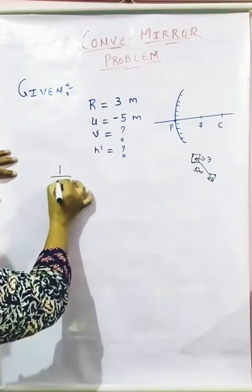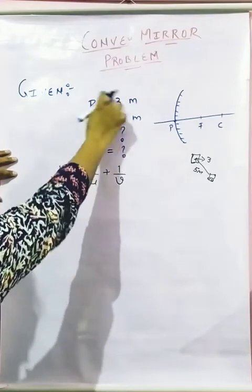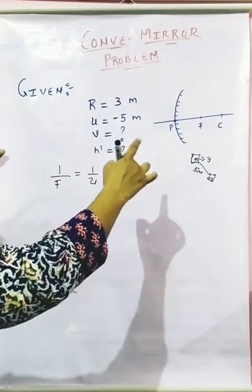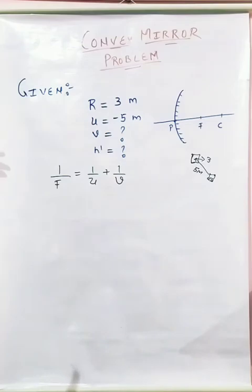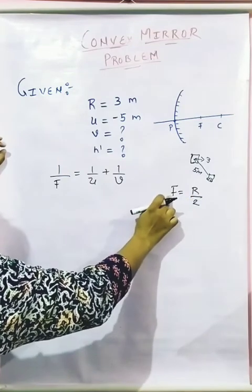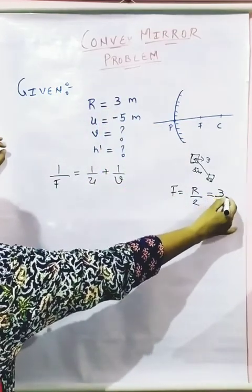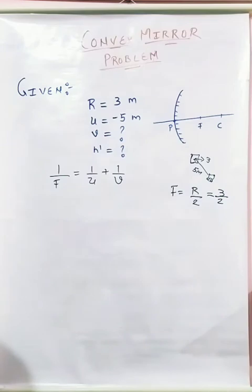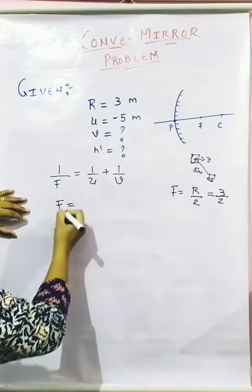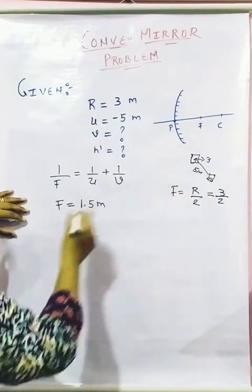So using mirror formula: 1/F = 1/U + 1/V. But if you will see here we have only R, not F. So how can I calculate my F? You remember the relationship between the focal length and the radius of curvature. It says F = R/2. So what is my F? By substituting this value, this is 3/2. So F I have got that is 3/2. When you divide 3 by 2, you are going to get F = 1.5 meter.